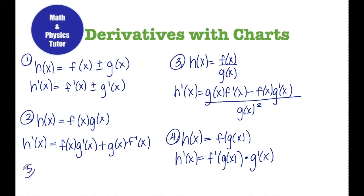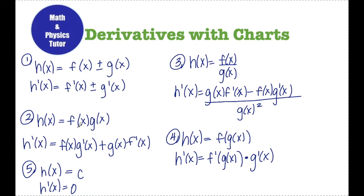The last very basic thing you need to remember: if h of x is equal to some constant c, then h prime — the derivative of a constant — is equal to just zero. Let's look at a couple of examples where I'm going to apply these rules and use some derivative charts to actually find the values of h prime of 2 or h prime of 3 or whatever it is that they're asking me for.